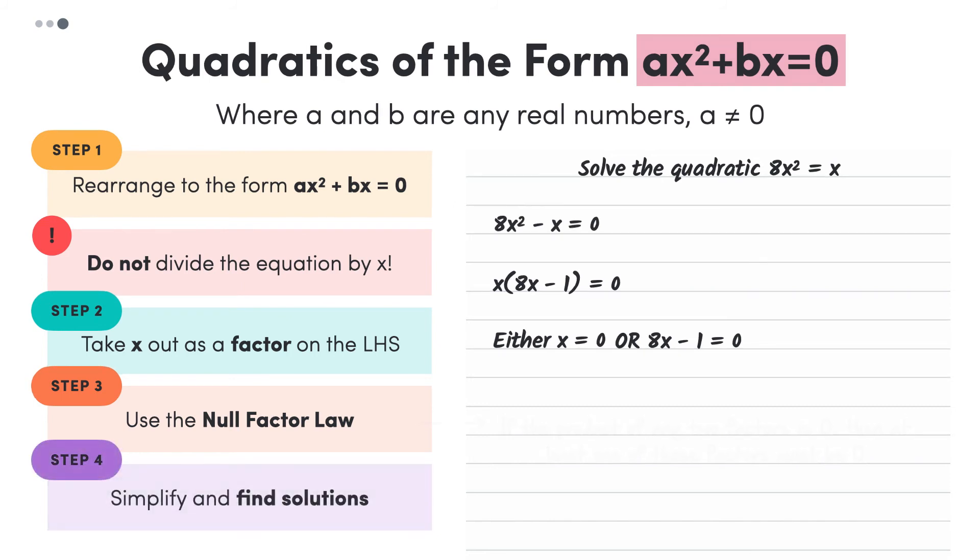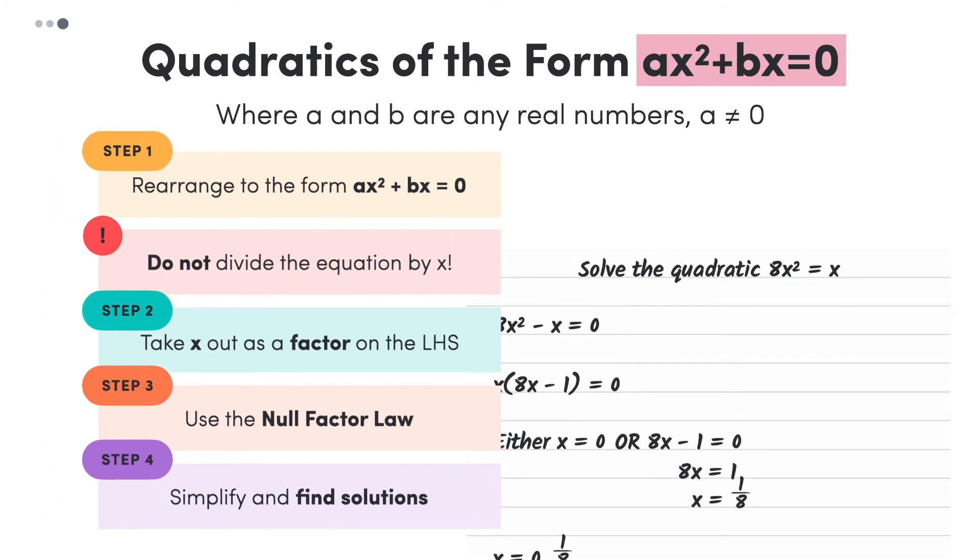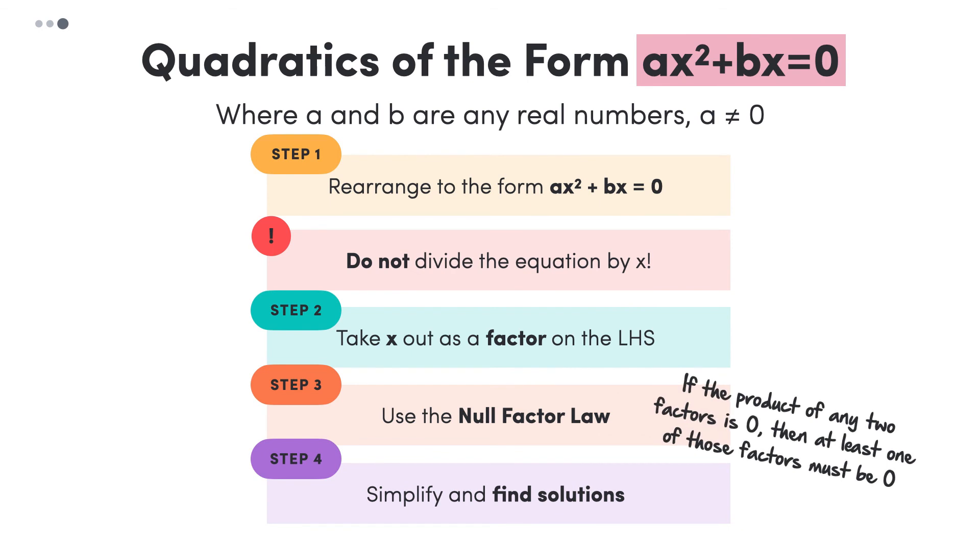Now we simplify the remaining expressions to find our solutions. So we end up with x equals zero, or 1 eighth. Great! To recap, these are the steps we use to solve quadratic equations of the form Ax squared plus bx equals zero. Remember, do not divide the equation by x, or you won't find one of your solutions.